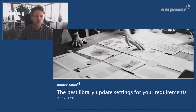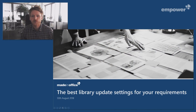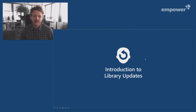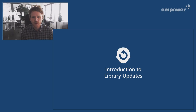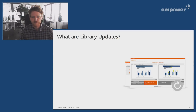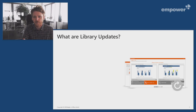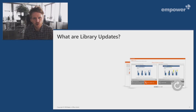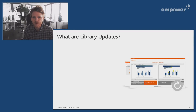First, let's define what library updates are. They are probably one of the most important aspects of the library, meaning you can benefit from having one version that is always up to date across all the various presentations that you use. The update result wizard pops up whenever there are outdated versions in your presentation, and it can be triggered by two different types of updates.